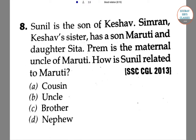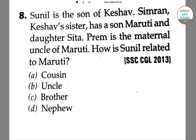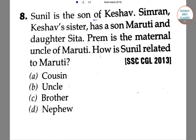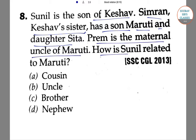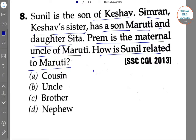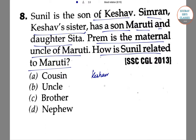In the next question: Sunil is the son of Kesha and Simran. Kesha's sister has a son Maruti and a daughter Sita. Prem is the maternal uncle of Maruti. How is Sunil related to Maruti? From the diagram, Kesha is the father and Sunil is his son.